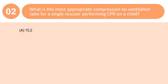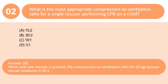What is the most appropriate compression-to-ventilation ratio for a single rescuer performing CPR on a child? A. 15:2. B. 30:2. C. 10:1. D. 5:1. Answer: B. When only one rescuer is present, the compression-to-ventilation ratio for all age groups except newborns is 30 to 2.